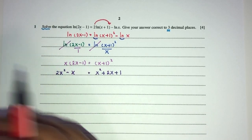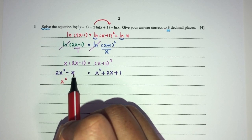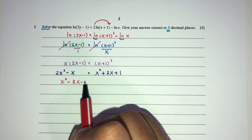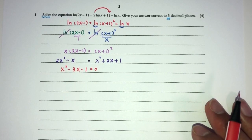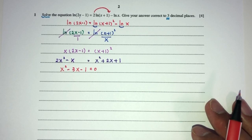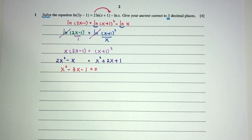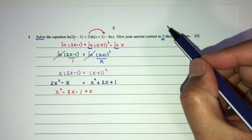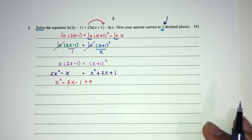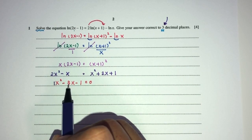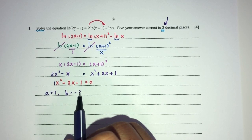Now send everything to one side so we can simplify further. So (2-1) x squared minus (1+2), that should be minus 3x minus 1 equals 0. Now this is a quadratic equation. We can try to factorize but it seems this one is not factorizable, so we have to use the formula. One good indication is that the question asks for three decimal places, so we should know it is not factorizable. So a is 1, b is minus 3, and c is minus 1.